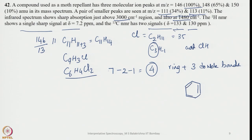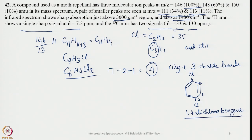With only 2 13C NMR signals, the molecule must be highly symmetric. On a benzene ring, placing both chlorines at the para position (1,4) achieves maximum symmetry. This is 1,4-dichlorobenzene (paradichlorobenzene). A C2 rotation along the Cl–Cl axis makes all four aromatic hydrogens chemically and magnetically equivalent, giving only one 1H NMR signal at 7.2 ppm. Two distinct 13C signals at 132 and 130 ppm are observed in a 1:2 ratio, confirming this assignment.